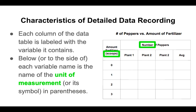We need to make sure that every column is labeled. The way I typically do it is to give a title. For our independent variable, the title of that column is the amount of fertilizer, and then you'll notice the parentheses — those are the units being measured. The amount of fertilizer is being measured in scoops. Up here with the number of peppers, I could have put the unit in parentheses as well and it would have done the exact same thing.